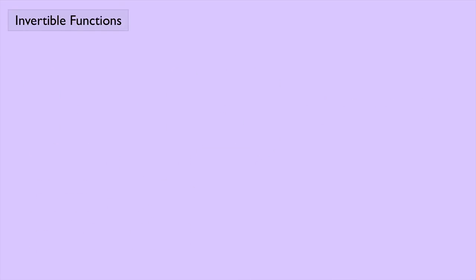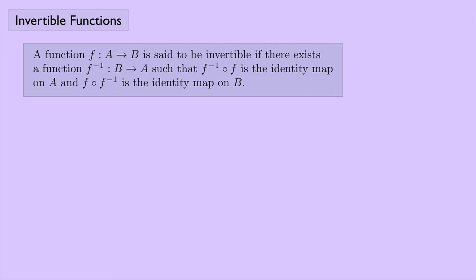Another way to think about inverses is in terms of the identity function. A function F, which goes from set A to set B, is said to be invertible if there exists a function F inverse, which goes from set B to set A, such that F inverse composed with F is the identity map on A, and F composed with F inverse is the identity map on B.